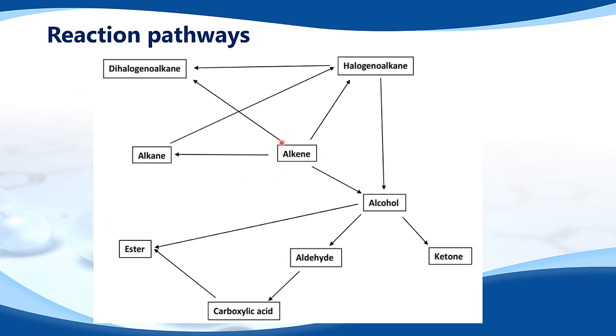So, we'll start with an alkene to alkane. The conditions are: react with hydrogen gas, a nickel catalyst, 150 degrees C. And the reaction is called hydrogenation.